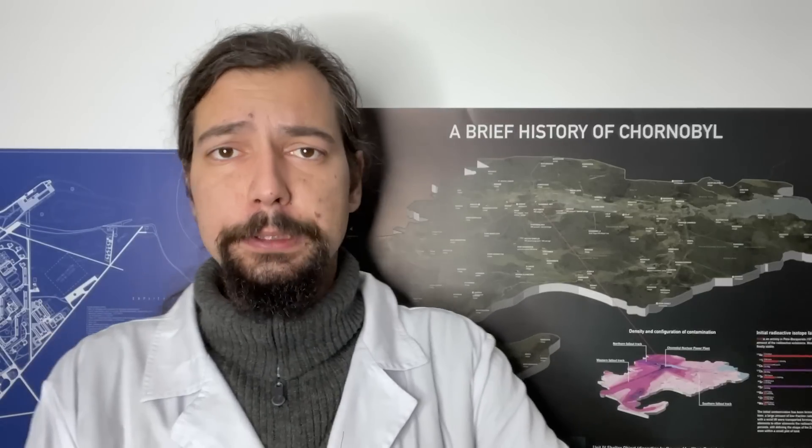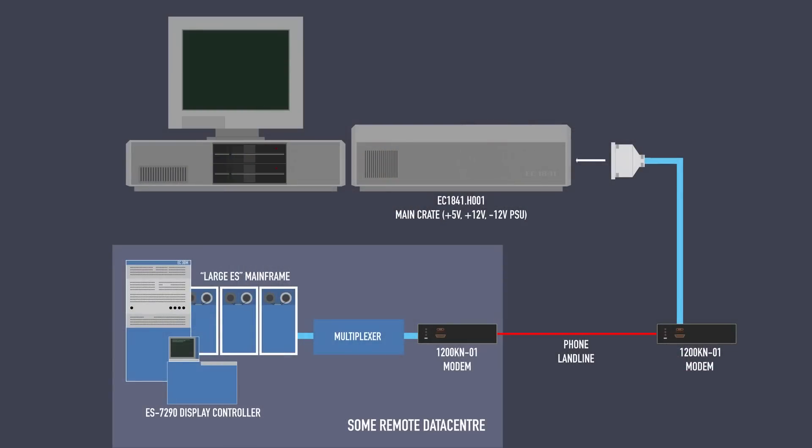If you watched our previous episodes, specifically the Patreon version of episode 2, where we discussed the various expansion boards and special models for the S1841 x86 compatible computer, you'll remember that there was such a functionality that you could connect that computer to this kind of modem. Then this modem would connect to another modem, which would in turn also be connected to a multiplexer, and the multiplexer would actually make a data exchange with the large ES mainframe.